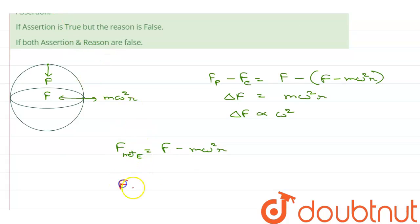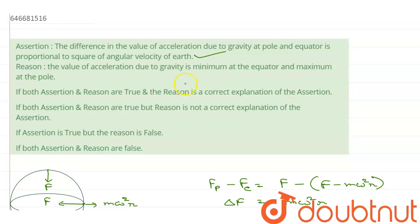And at the poles, f net p will be equal to simply f. So, we can see that at the poles, the force is maximum, while at the equator, the force is minimum.